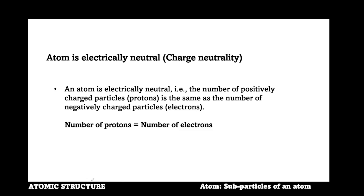So, the simple definition is that an atom is electrically neutral because the number of protons equals the number of electrons. For instance, if you have 10 protons, which are positive charges, and then you have 10 electrons, which are negative charges, the numbers are the same and there is no net difference. So we can regard such an atom to be electrically neutral.